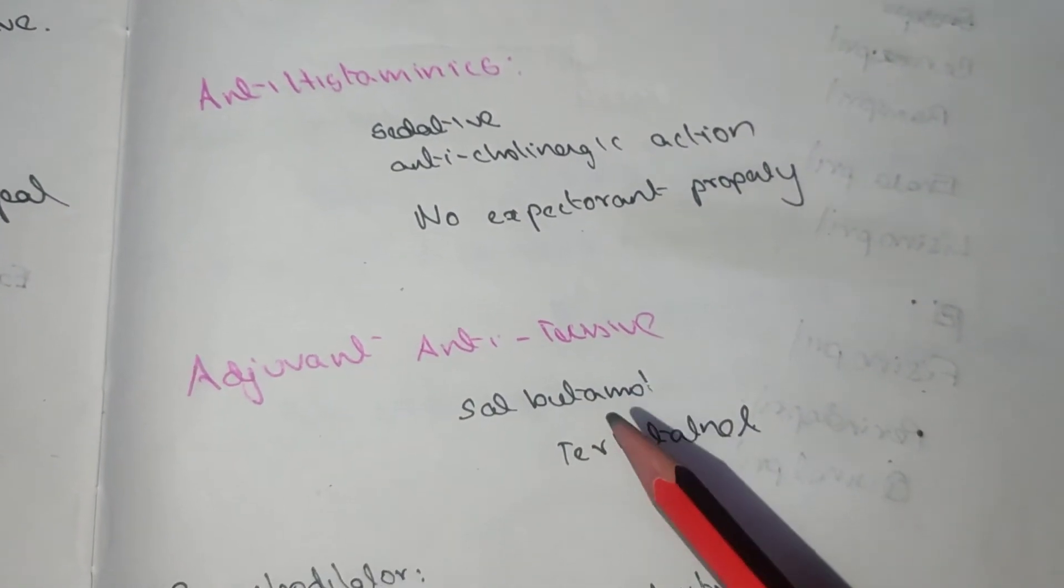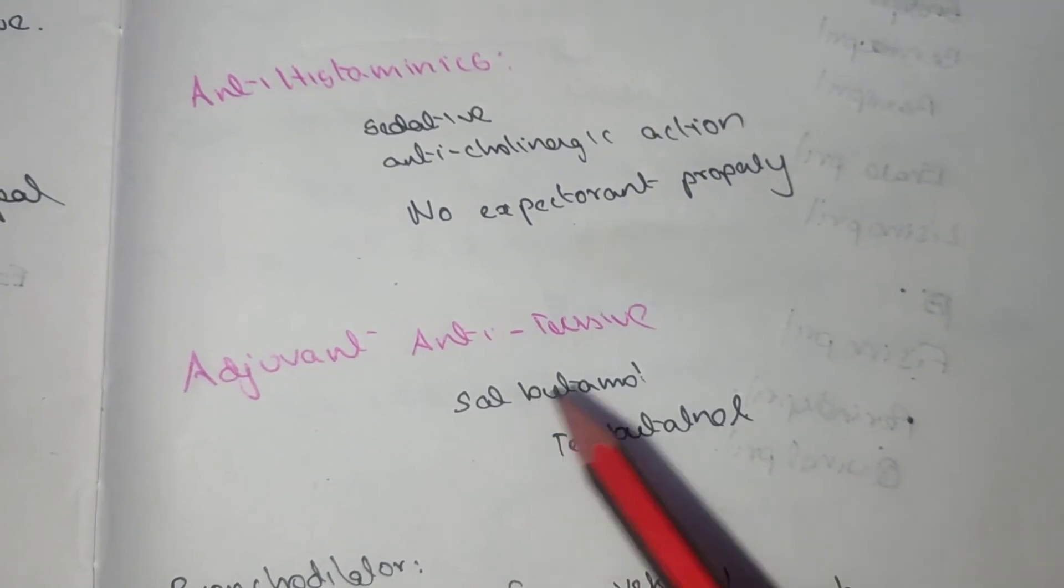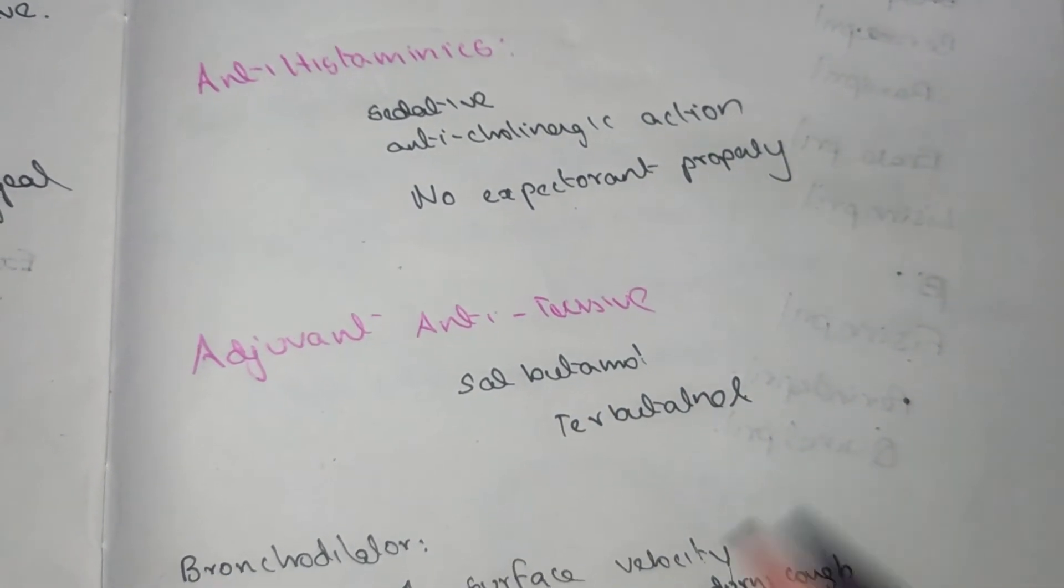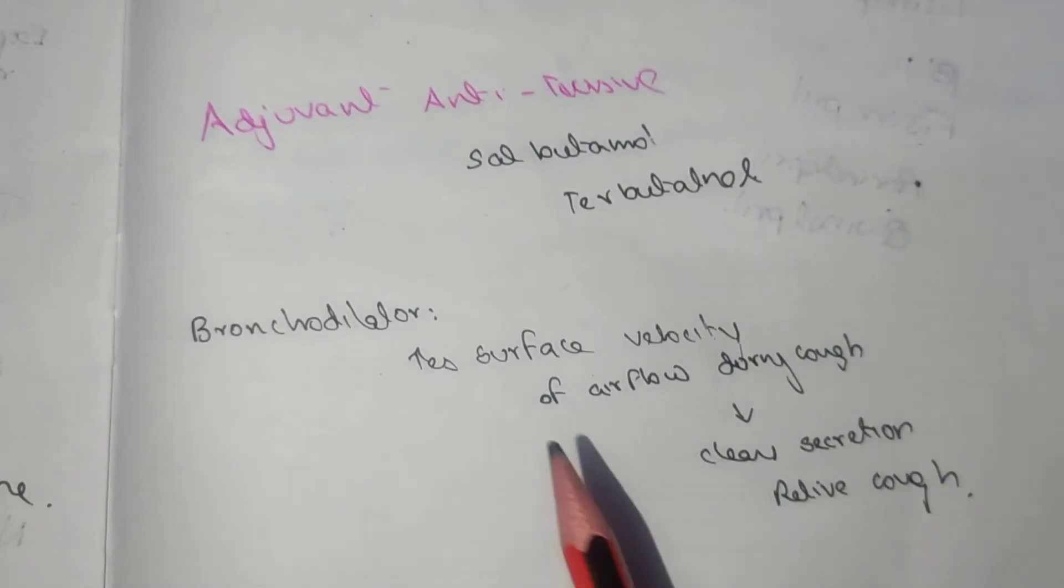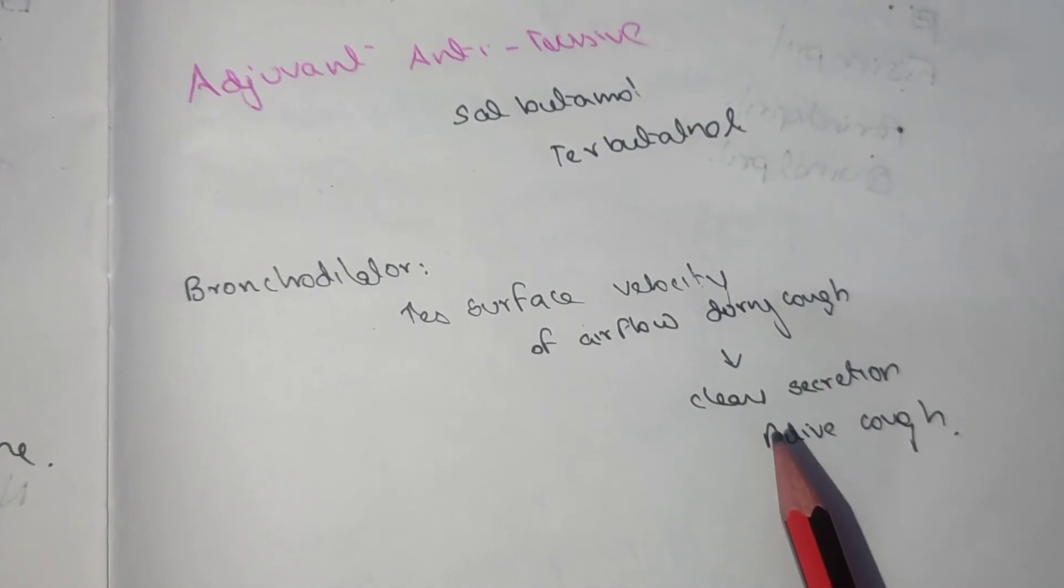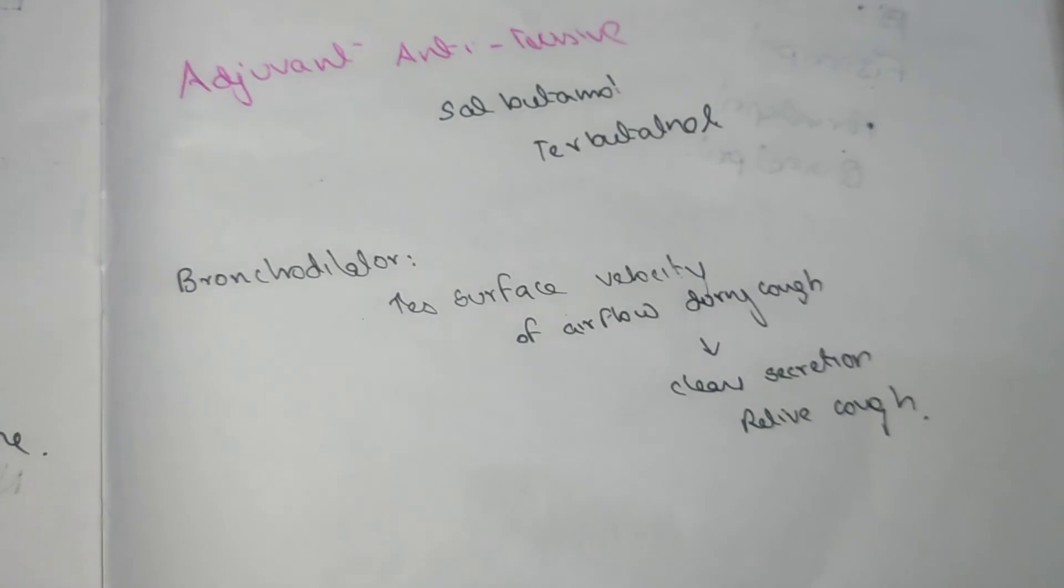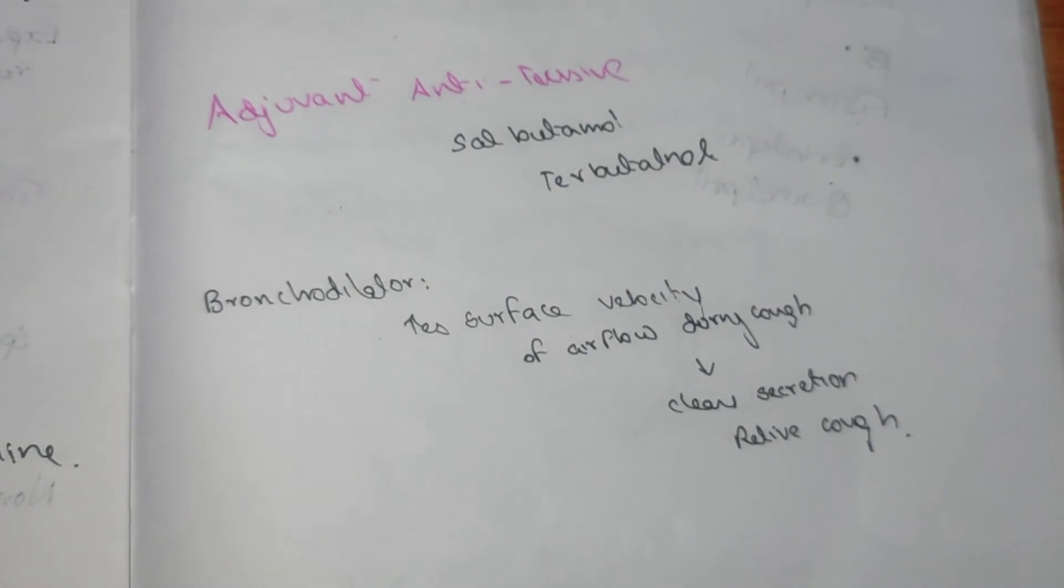Adjuvant anti-tussives are salbutamol and terbutaline, which are bronchodilators. The bronchodilators increase the velocity of the airflow during the cough and clear and relieve the cough. Thank you for more videos.